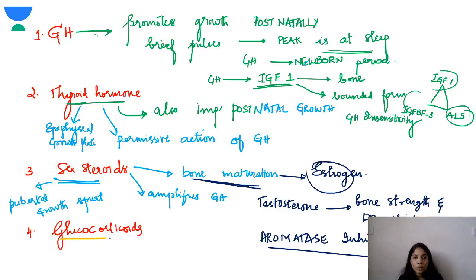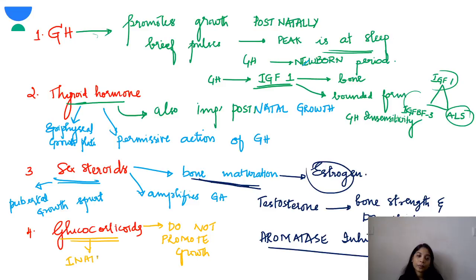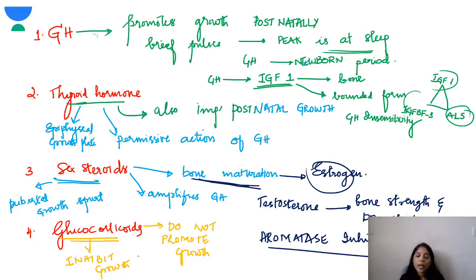Glucocorticoids do not promote growth — instead they inhibit growth. They are very potent inhibitors of growth. Glucocorticoid excess can cause growth inhibition. One example of glucocorticoid excess is Cushing syndrome.